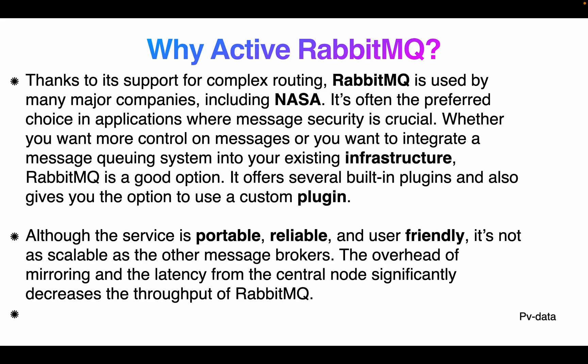RabbitMQ supports complex routing and is used by many companies including NASA. It's often the preferred choice for applications where message security is critical, where you want to control messages, and where you want to integrate a message queuing system into existing infrastructure. It offers several built-in plugins and the option to use custom plugins. Although the service is portable, reliable, and user-friendly, it is not as scalable as Kafka.